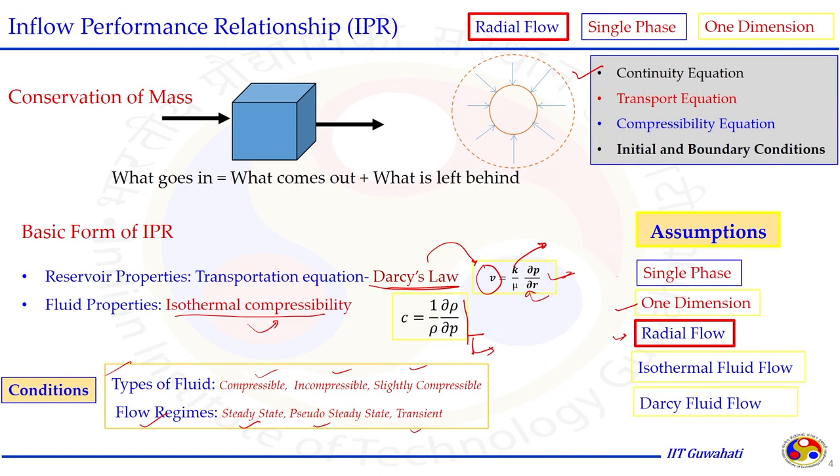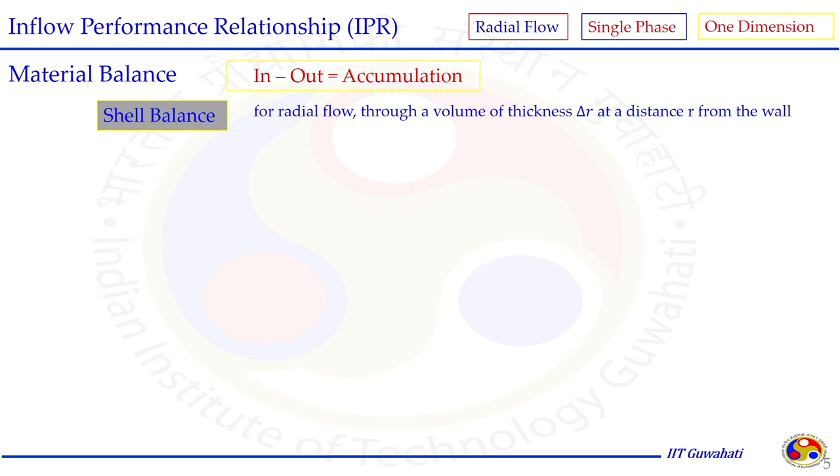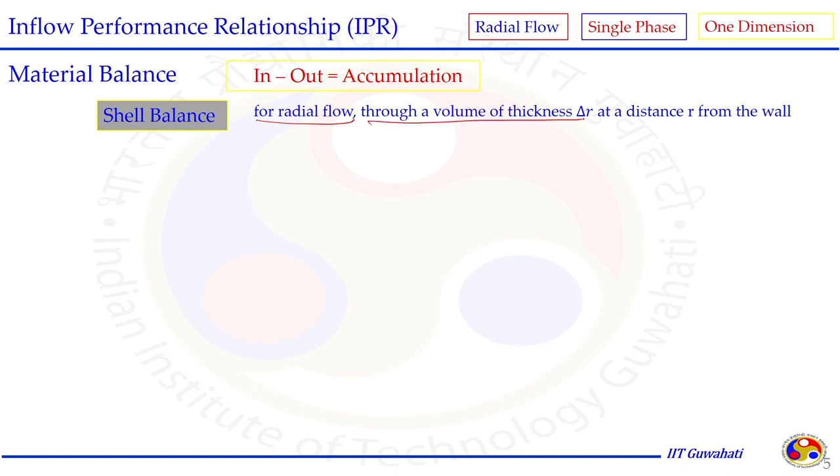The third assumption is radial flow direction. We also consider isothermal fluid flow condition — we did not include any energy equation; we assume conditions within the reservoir are isothermal with uniform temperature. That is where the definition of isothermal compressibility is also applicable. Another assumption is Darcy fluid flow, which implicitly includes laminar flow conditions.